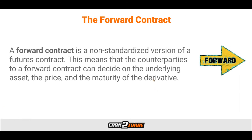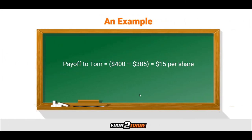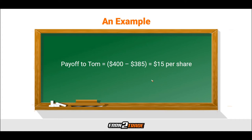Next comes the forward contract. A forward contract is a non-standardized version of a futures contract, meaning the counterparties can decide on the underlying asset, price, and maturity of the derivative. There is no exchange to act as intermediary, no need for contracts on a definite lot size, and mark-to-market does not have to take place daily — so there's no daily account settlement. There is no margin requirement, but there is a higher possibility of a counterparty defaulting on the settlement date. The settlement of a forward contract takes place on the maturity date, and the payoff formula is the same as with a futures contract.